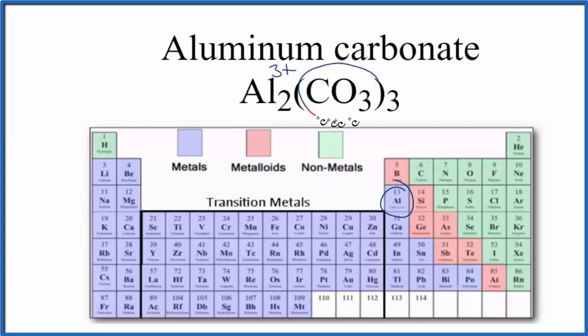The carbonate ion, CO₃—this is a good one to remember—has an ionic charge of 2-. We have three carbonate ions: 3 times 2- equals 6-. For our two aluminum atoms: 2 times 3+ equals 6+. You can see the charges balance out. We have a net charge of 0.